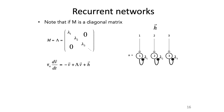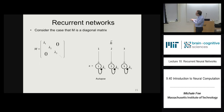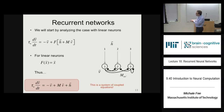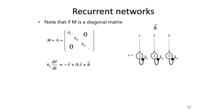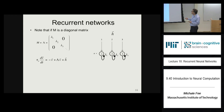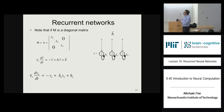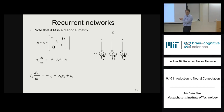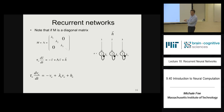Now we can write down the equation for this network. We simply replace the recurrent weight matrix M with that diagonal matrix. The time rate of change of the output vector is just minus v plus the diagonal matrix times v plus the inputs. Writing this out separately for each output neuron, you see that each neuron has an independent equation — they're all uncoupled. So we can understand how this network responds just by studying this equation for one neuron.